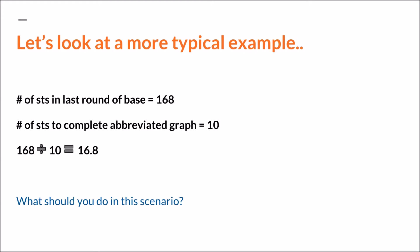We divide the number of stitches in the last round of the base — 168 — by the number of stitches it takes to complete the abbreviated graph, which is 10, and we get 16.8, which should be the number of times that you repeat the abbreviated graph. But how do you repeat an abbreviated graph 16.8 times? You can't, so what should you do in this scenario? The first and easiest option is just to try using a different base or a different pattern, and that's pretty self-explanatory. But let's look at the options that are a bit more complicated.